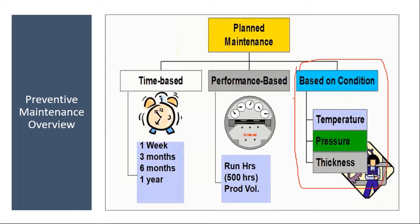Basically, any equipment normally expects certain conditions — like it should have a certain temperature, let's say from 0 to 80 degrees, or they expect some pressure within some limits. If that particular condition is not fulfilled, then they go for preventive maintenance.